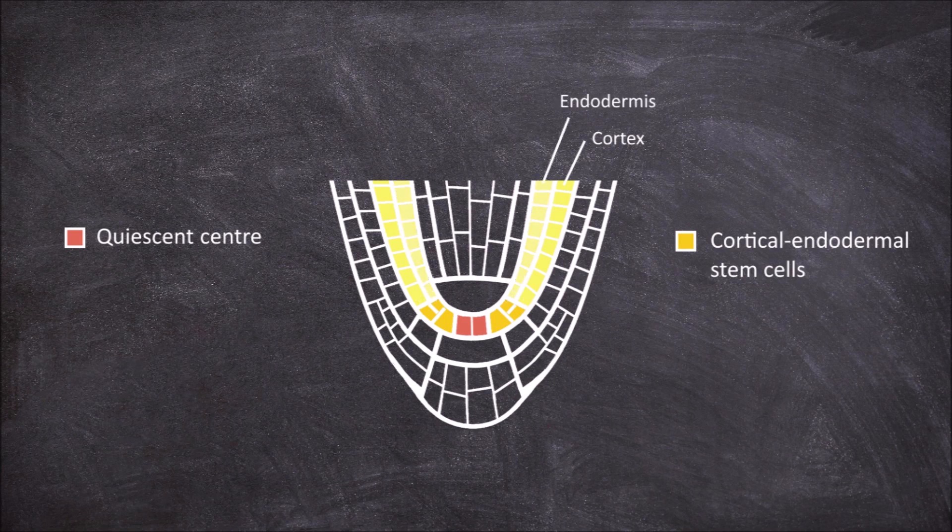The next region is the columella stem cells. These stem cells are found apically to the quiescent center cells. The stem cells in this area divide both anticlinally and periclinally to produce the cells that become the columella.